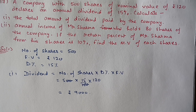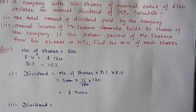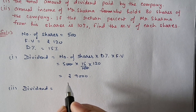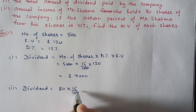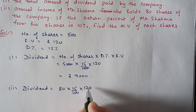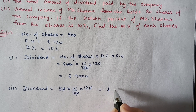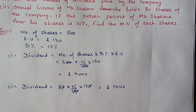For the second part, we calculate the annual income of Mr. Sharma who holds 80 shares. Annual income means dividend, using the same formula: number of shares × dividend percentage × face value. Mr. Sharma has 80 shares, dividend percentage is 15%, face value is 120 rupees. After calculation we get 1,440 rupees as dividend received.